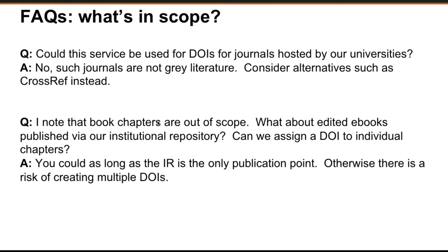The change in ANS DOI policy is in line with DataCite business model principles. ANS acts as an agent for the DataCite DOI registration agency and grey literature is well within the scope of that service. Regarding scope questions: journals hosted by universities — such as the Queensland Archaeological Research Journal hosted by UQ Library using OJS software — are not grey literature, so you must go through CrossRef for those DOIs. Edited e-books published by an institutional repository could have DOIs for individual chapters, as long as the institutional repository is the only publication point.